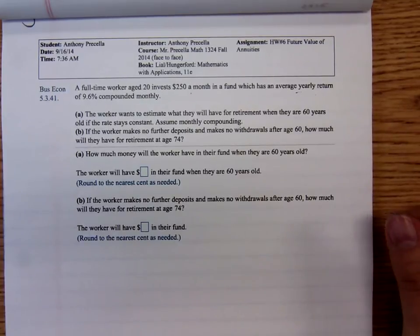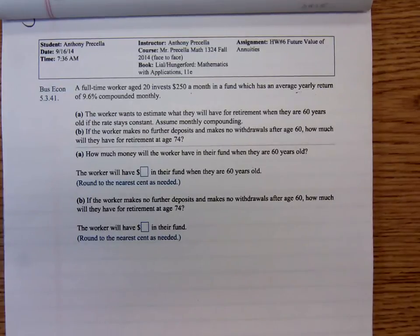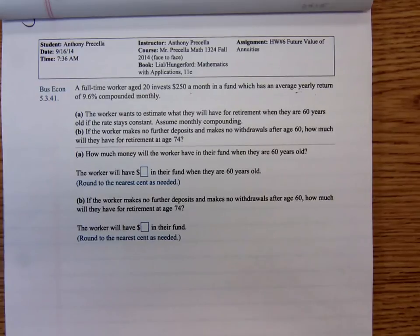They don't say whether the money's being paid at the beginning of the month or put into the account at the end of the month, so in that event we just have to assume it's an ordinary annuity. The payments are made at the end of the period.